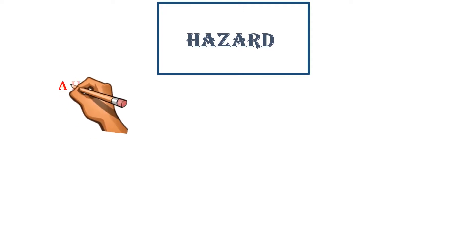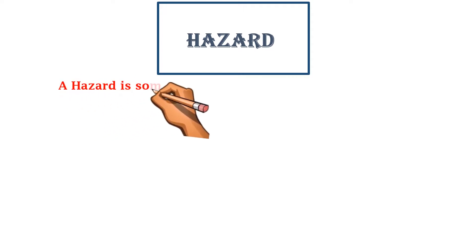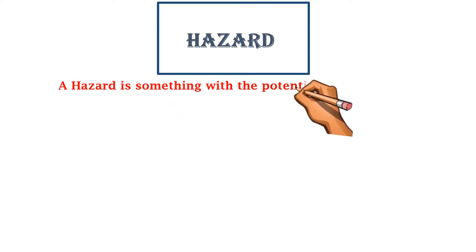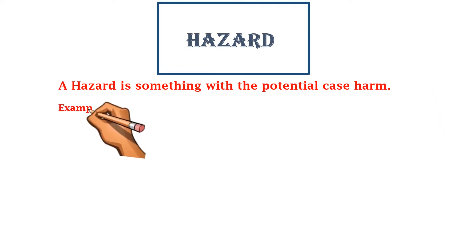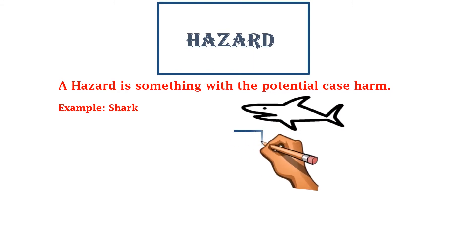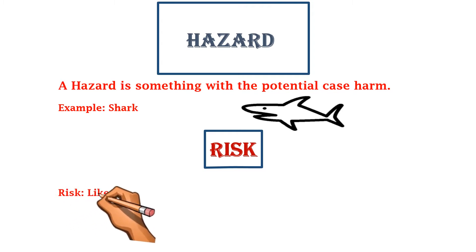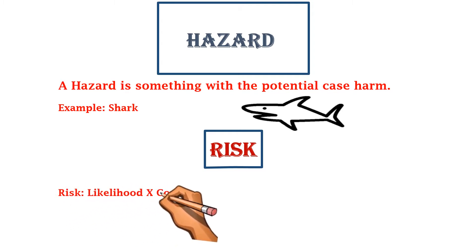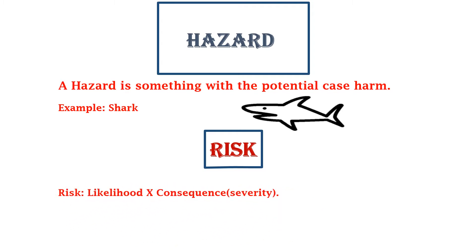A hazard is something with the potential to cause harm. For example, a shark is a hazard. The other thing you should understand is risk — risk is the likelihood and consequence, or you can say severity.